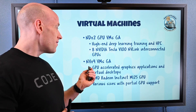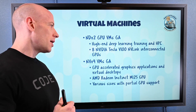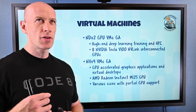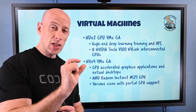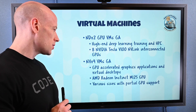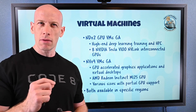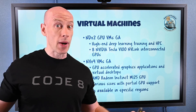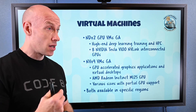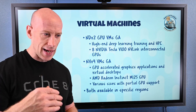There are now the NVv4 VMs. These are GPU-accelerated, so if you've got a graphics application or a virtual desktop, you can use these. They actually let you have fractions of a GPU as well, so you can divide up that processor. These are using the MI25 GPUs. Both of these are available in specific regions — they're not available everywhere. They're enabled for certain regions in the US and certain regions in Europe, for example, so go check the details.